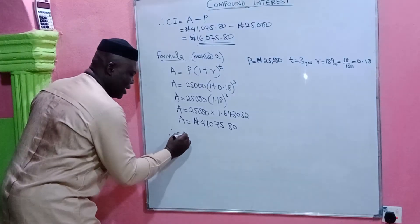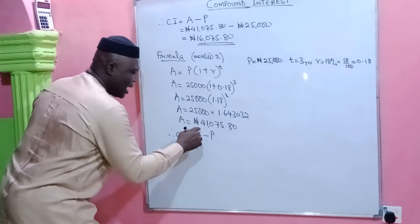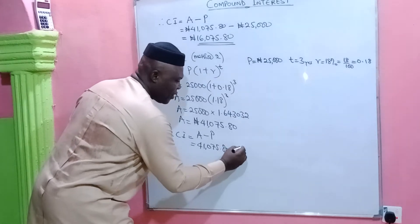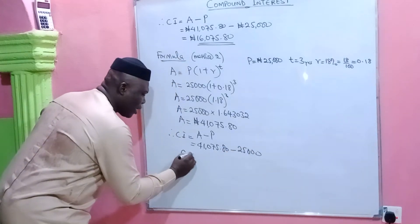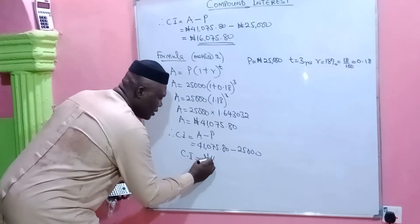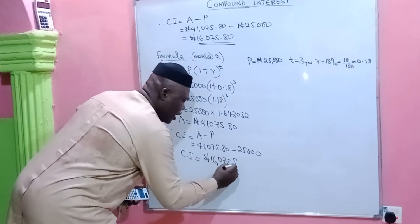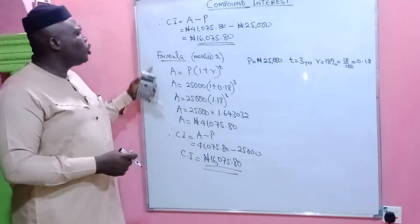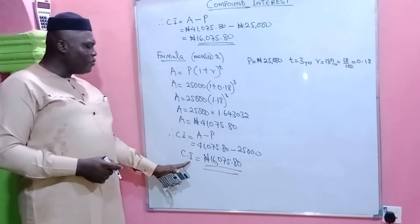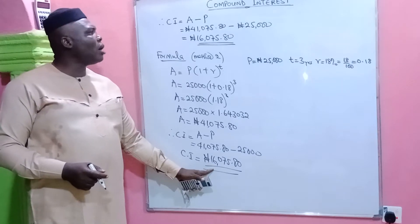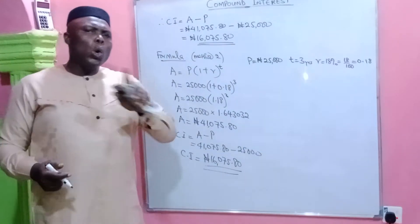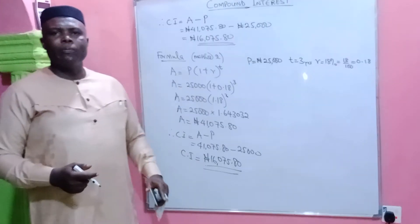Therefore, compound interest equals amount minus principal: 41,075.80 minus 25,000 Naira, giving us a compound interest of 16,075.80. You can see that this very short formula gives the same result as the step-by-step method — the same amount, no difference by a single digit. Everything is exactly the same by use of the formula. The step-by-step method is quite cumbersome, especially if the number of years is more than 3. All you need to do is input it into the formula and within a few steps you are done.